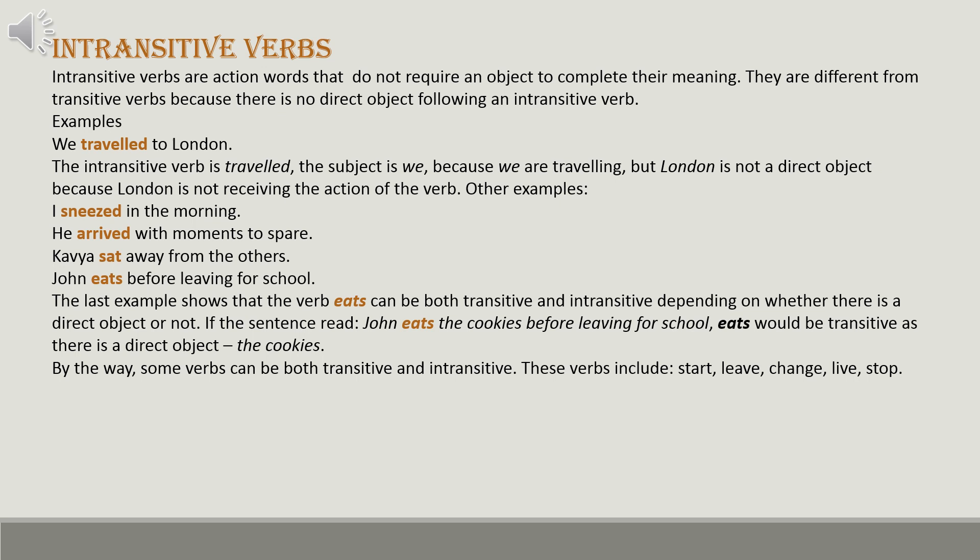Other examples: 'I sneezed in the morning,' 'He arrived with moments to spare,' 'Kavya sat away from the others,' 'John eats before leaving for school.' The last example shows that 'eats' can be both transitive and intransitive depending on whether there is a direct object. If the sentence read 'John eats the cookies before leaving for school,' 'eats' would be transitive. Some verbs — such as start, leave, change, live, and stop — can be both transitive and intransitive.